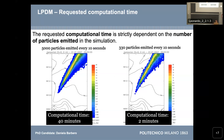The constraint of time remains with the Lagrangian particle dispersion model. The time requested by a simulation is strictly related to the number of particles emitted during the whole simulation. Fewer particles emitted means a faster simulation. But the number of particles emitted strongly influences also the quality of the results. If we use a number of particles which is not high enough, the quality of the results of the concentration field are bad, and the concentration field is less smooth and also less statistically reliable.